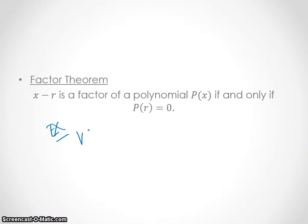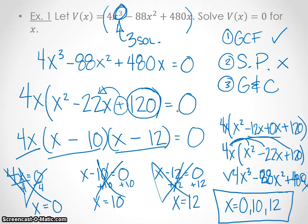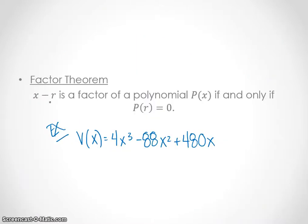So V(x) equals 4x cubed minus 88x squared plus 480x. And then we're going to take one of these solutions, because it says that one of these should be solutions. So I'm going to use 10, because 10 is probably going to be easy. 0 is a little too easy, because obviously that will make this whole thing 0. So that one checks out.